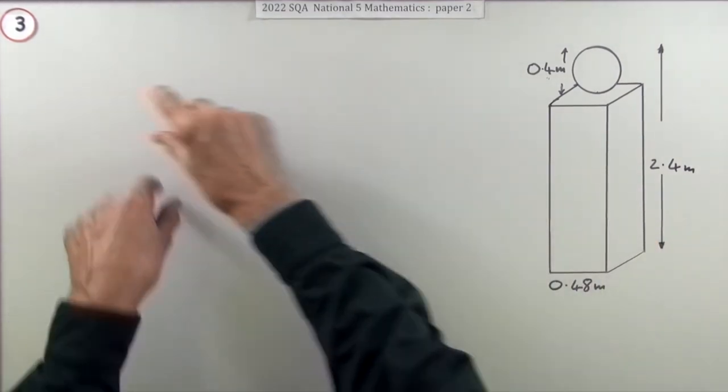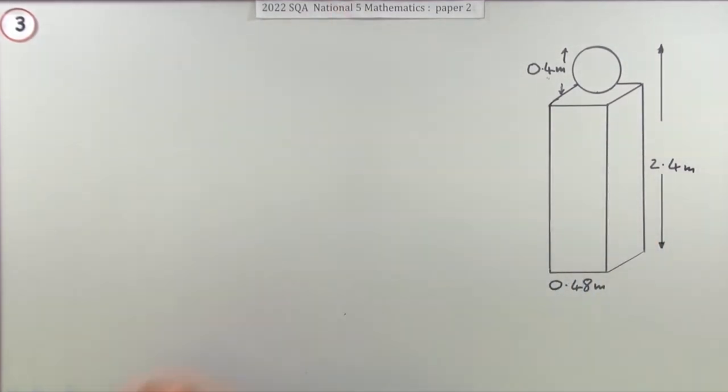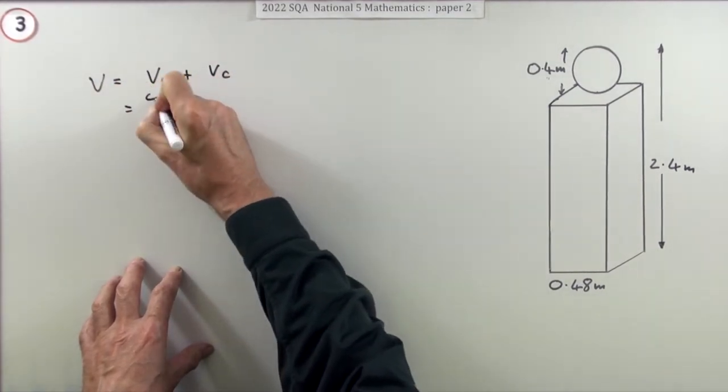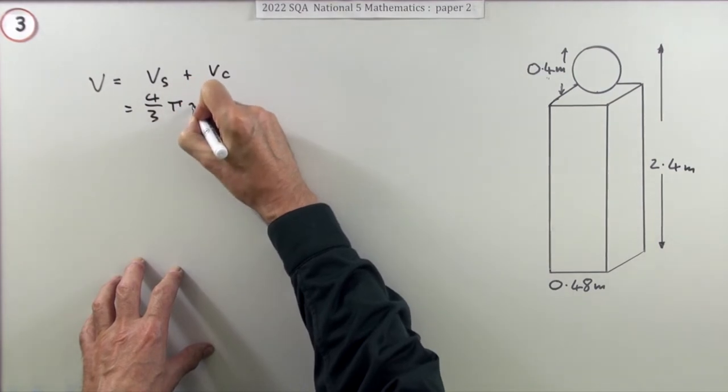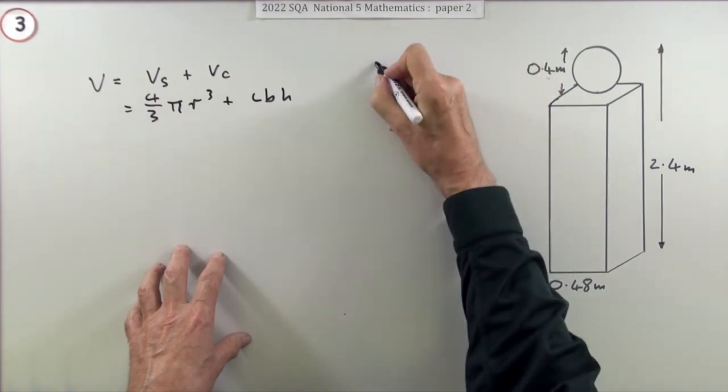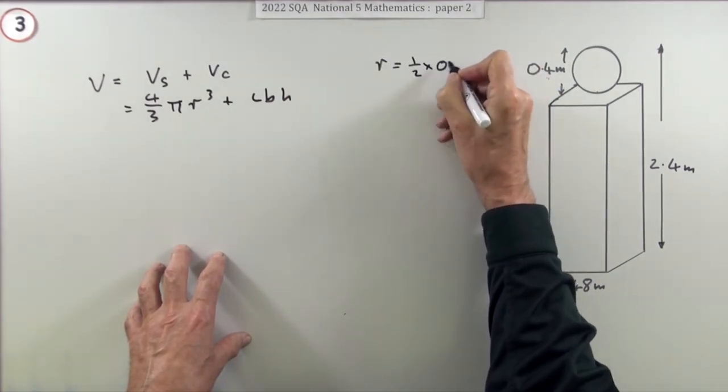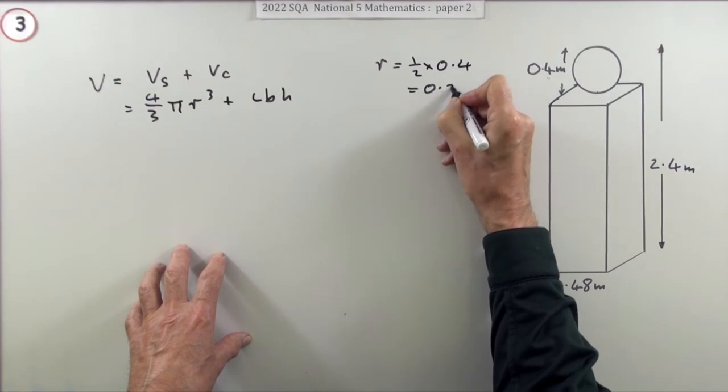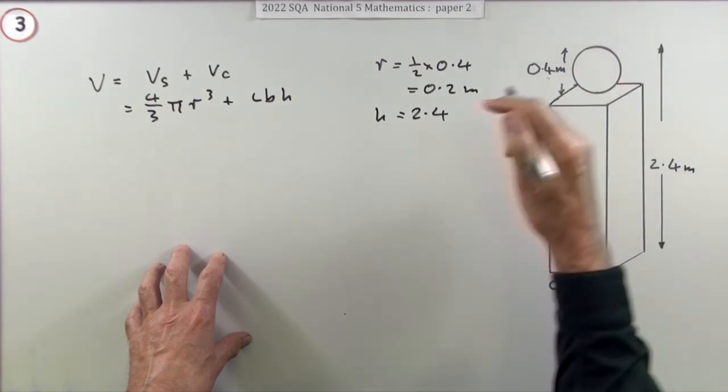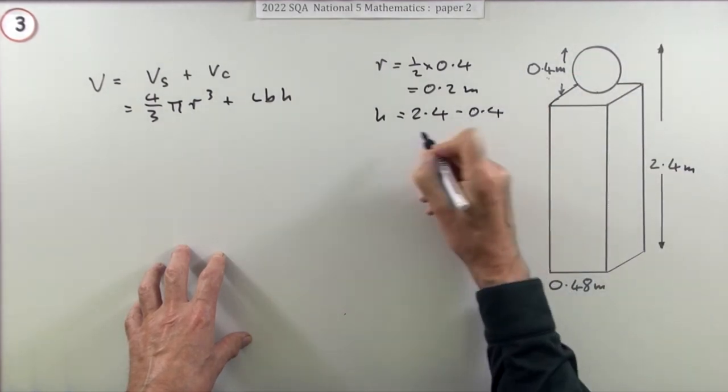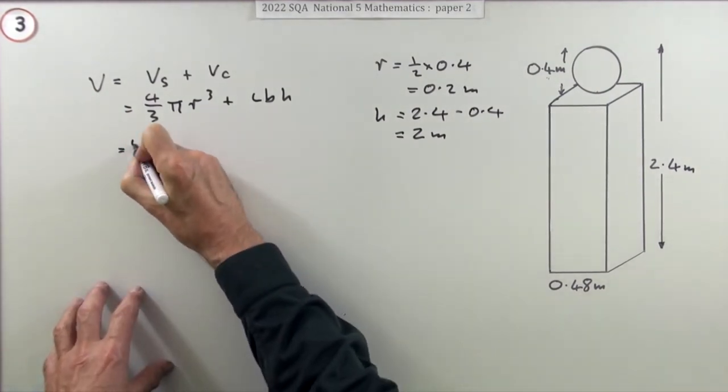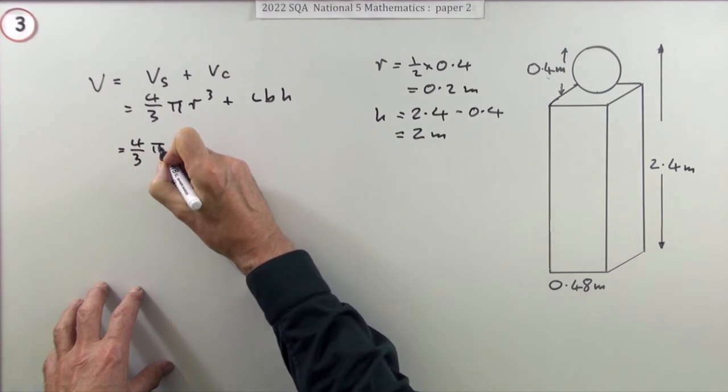Volume of a sphere, volume of a cuboid, add them together in one go. The total volume would be the volume of the sphere plus the volume of the cuboid: 4/3 π r³ plus length times breadth times height, where the radius is half of 0.4, so 0.2 meters, and the height is 2.4 minus 0.4, which is 2 meters.